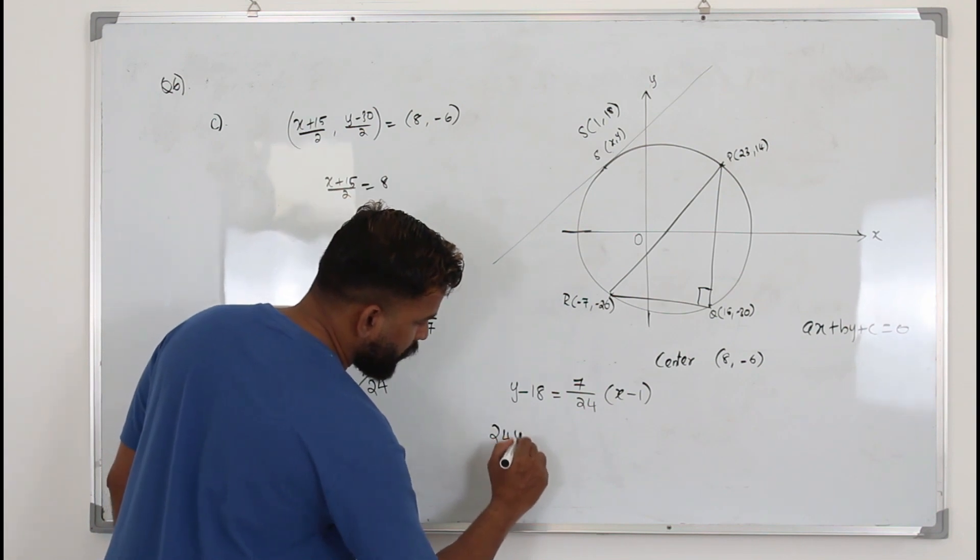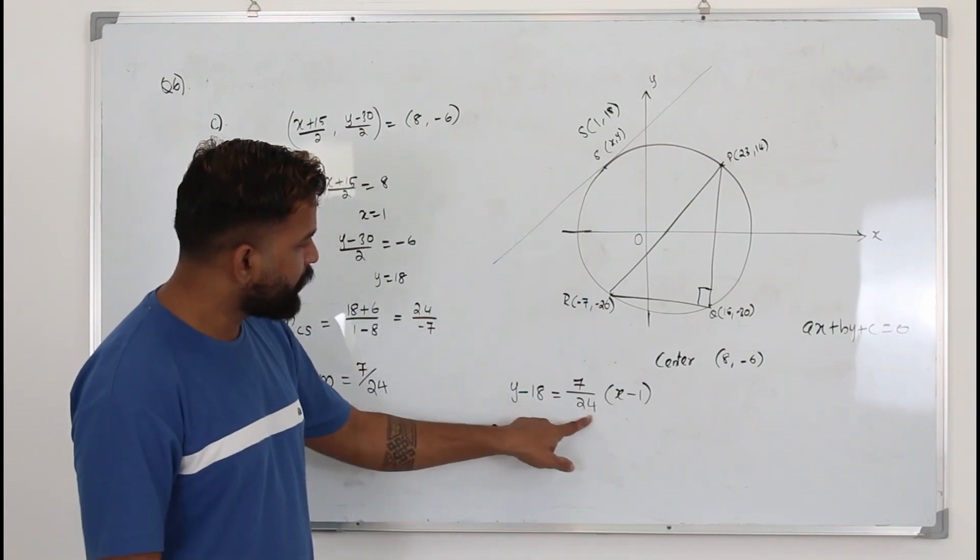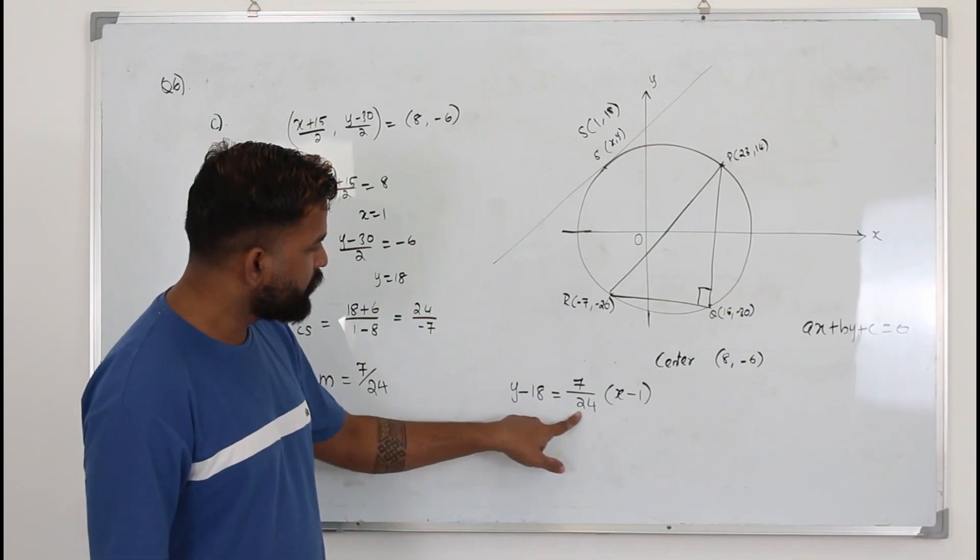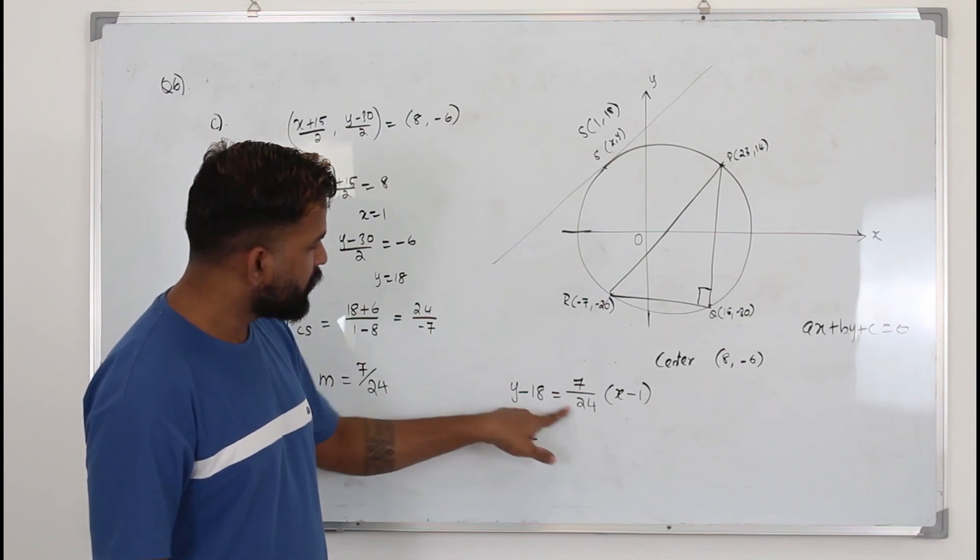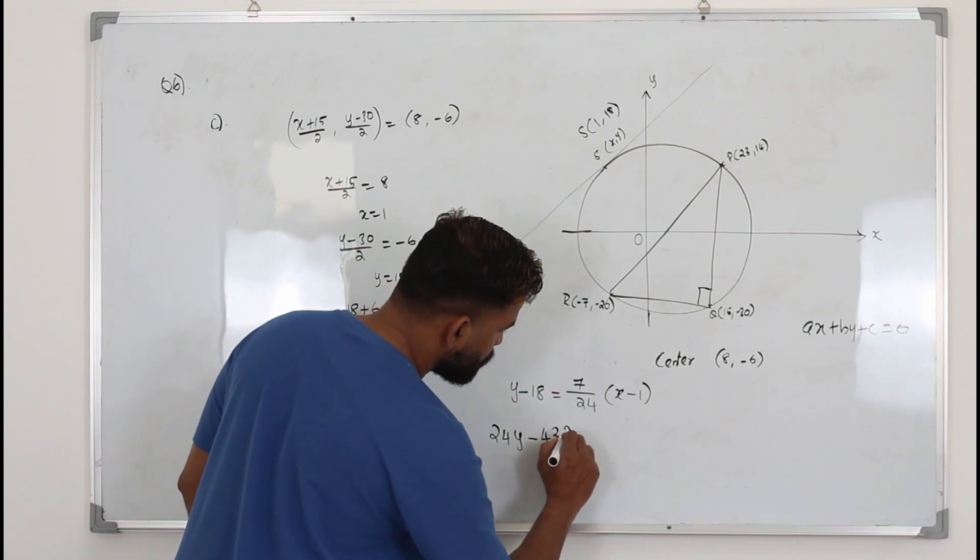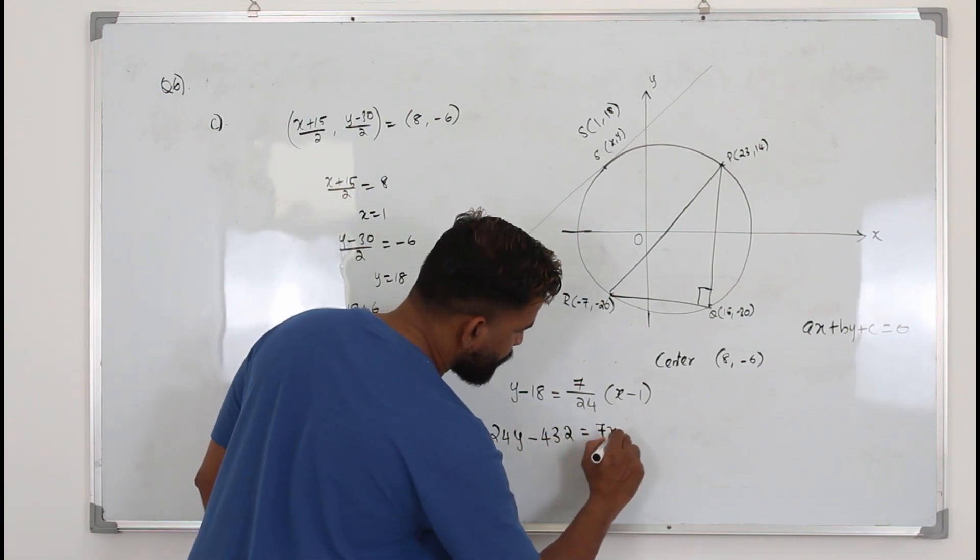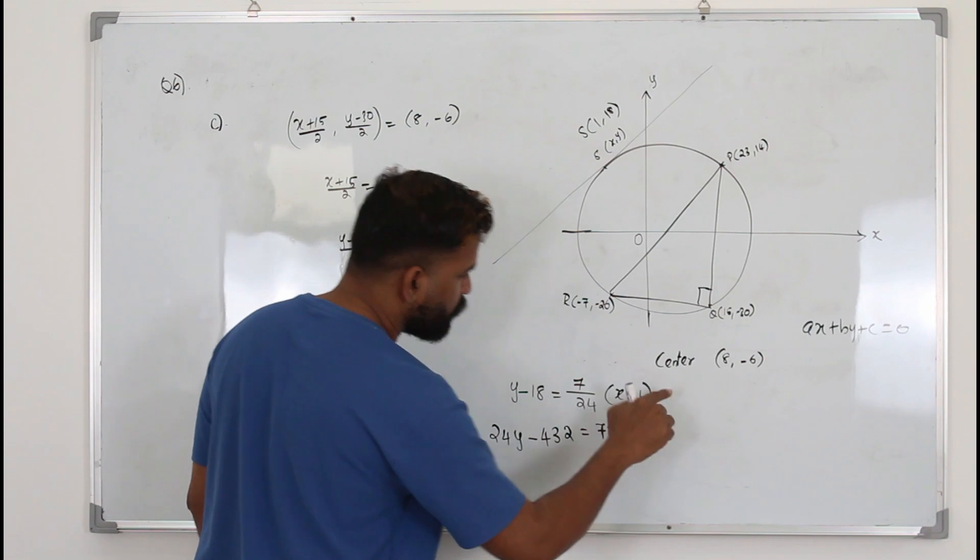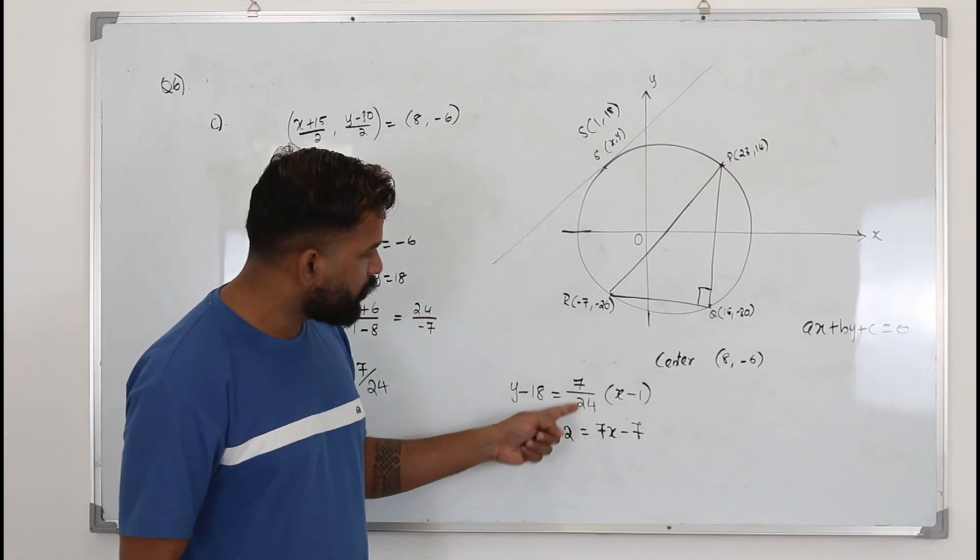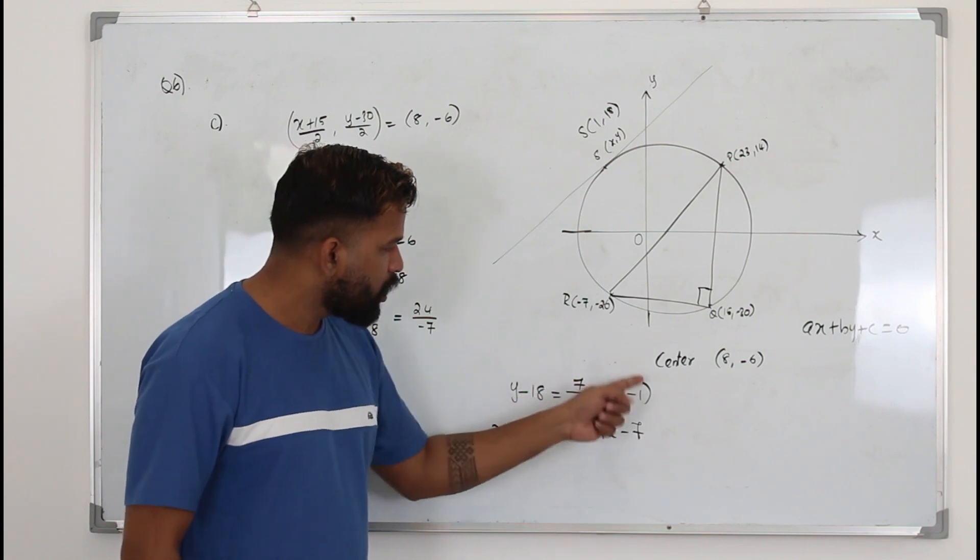It's 24y minus 18 times 24 which is 432, equals 7x minus 7. Multiply it throughout by 7 because when you multiply both sides by 24, here the 24 will be cancelled. You will have only 7, open the bracket.